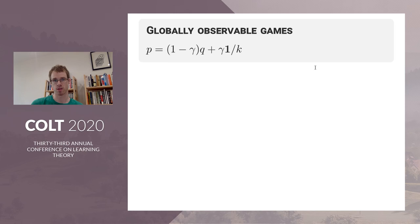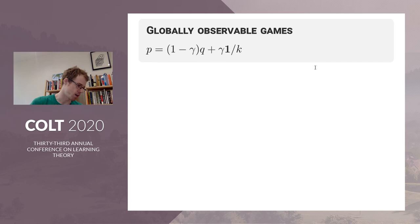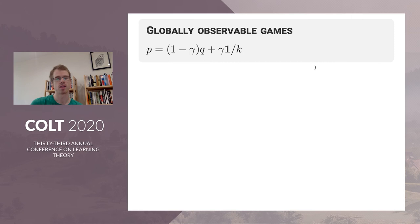This mirrors exactly what's been done in the past for globally observable games: take exponential weights, mix an appropriate amount of uniform exploration, and optimize the scalar. But the nice thing here is this algorithm does everything automatically — for example, if there's only one informative action, the algorithm won't play a uniform exploration distribution; it will focus much more strongly on that action.